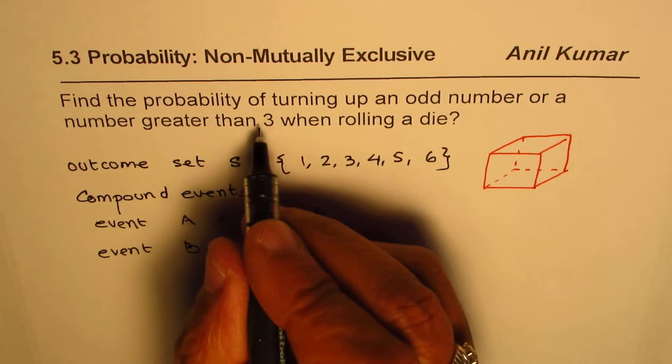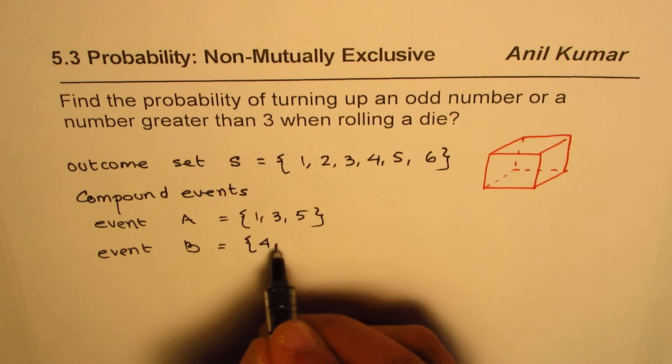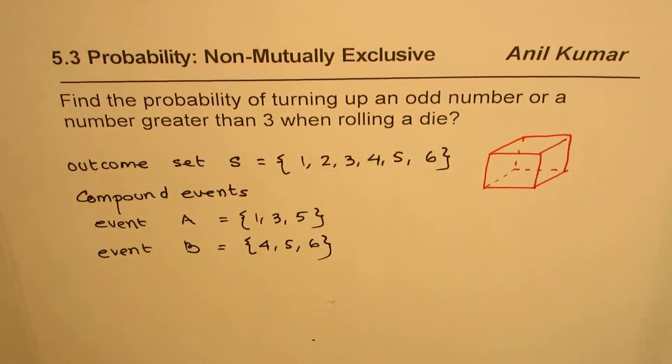And event B for us is number greater than 3. So event B is number greater than 3. That means 4, 5, 6, 4, 5, 6.